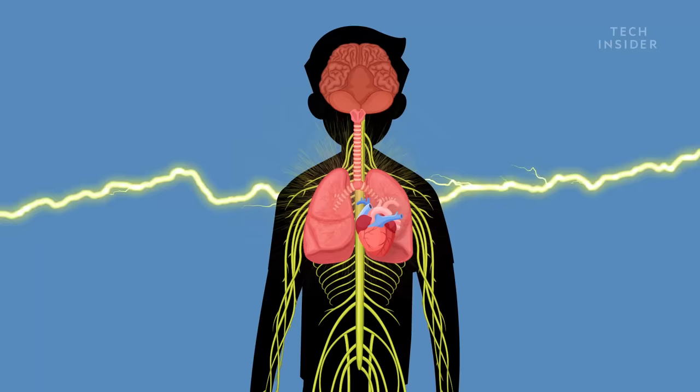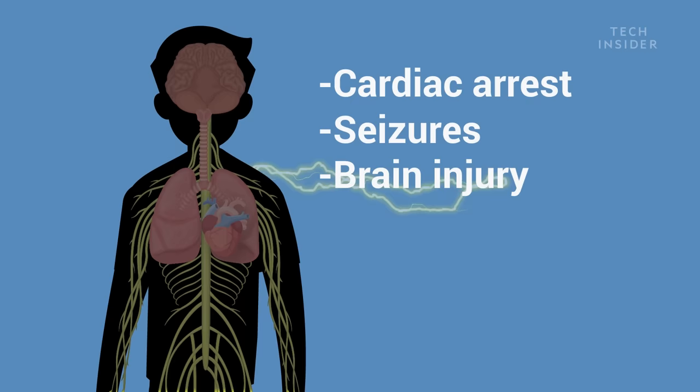When that amount of electricity enters your body, it short-circuits the small electrical signals that run your heart, lungs, and nervous system. This can lead to cardiac arrest, seizures, brain injury, spinal cord damage, and even amnesia.